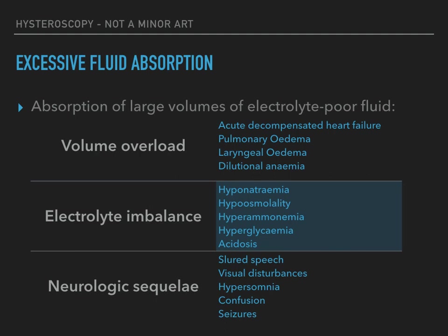Complications related to distending media vary according to the patient population, length of procedure, size of intracavitary pathology, depth of fibroid penetration into the myometrium, creation of false tracts or cervical laceration, type of pathology — for instance polyp versus fibroid — and the medium used. A patient's ability to adapt to fluid overload varies with age and comorbid conditions. Absorption of large volumes of electrolyte-poor fluid may result in the following complications: volume overload presenting as acute decompensated heart failure, pulmonary edema, laryngeal edema, or dilutional anemia; electrolyte or other plasma imbalances such as hyponatremia, hyperosmolality, hyperammonemia, hyperglycemia, acidosis; and neurological sequelae like slurred speech, visual disturbance, hypersomnia, confusion, seizure, and coma.